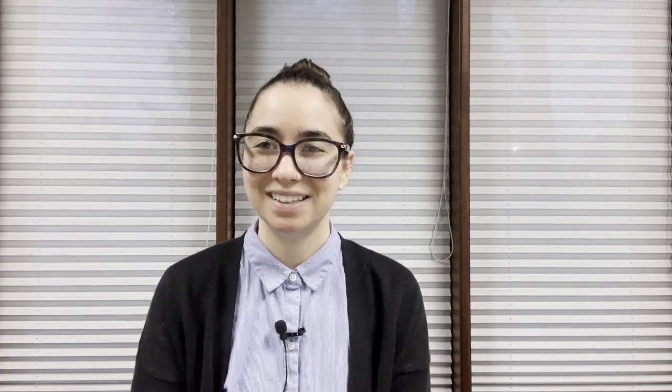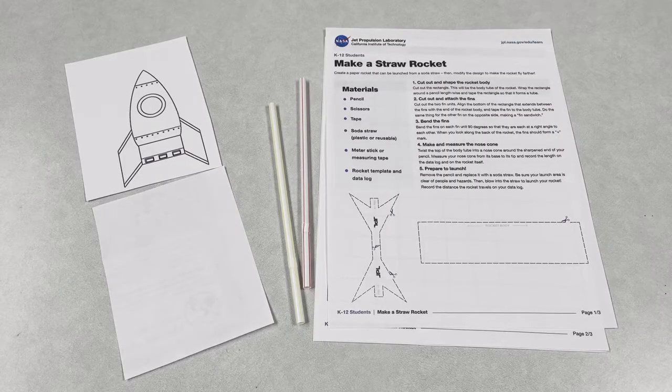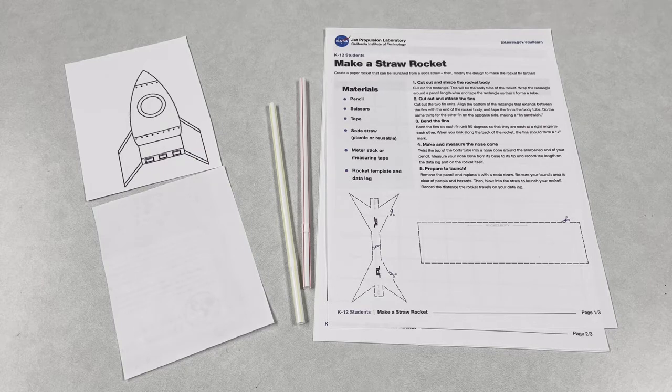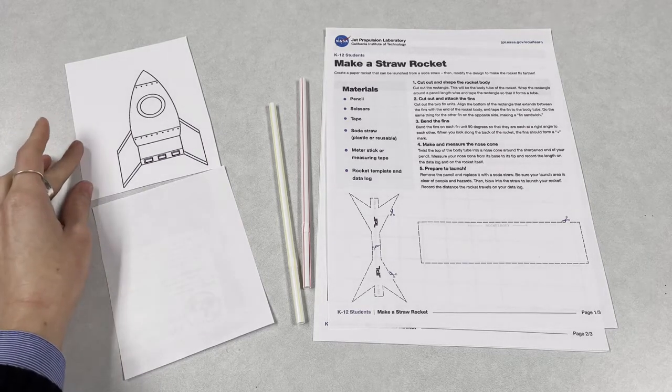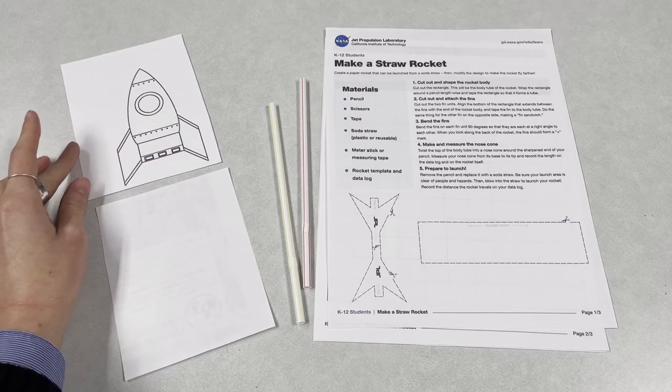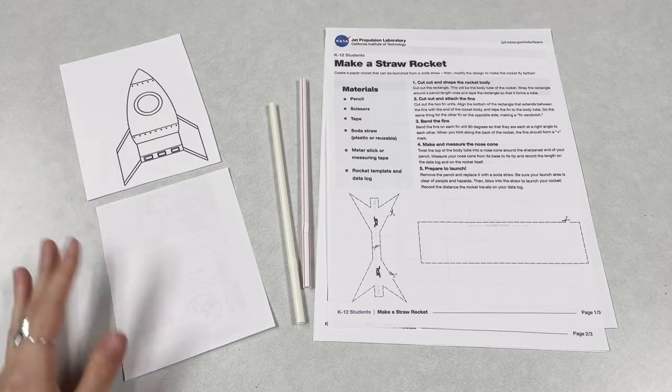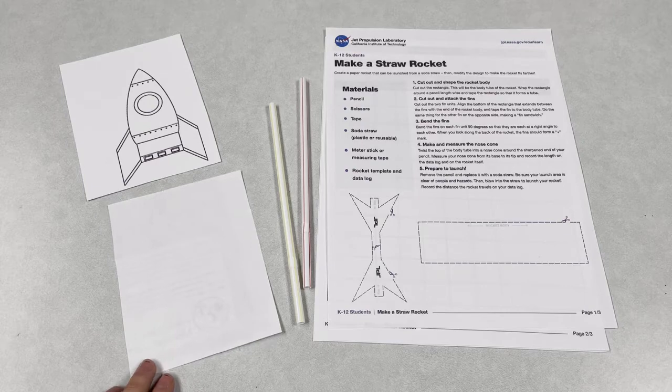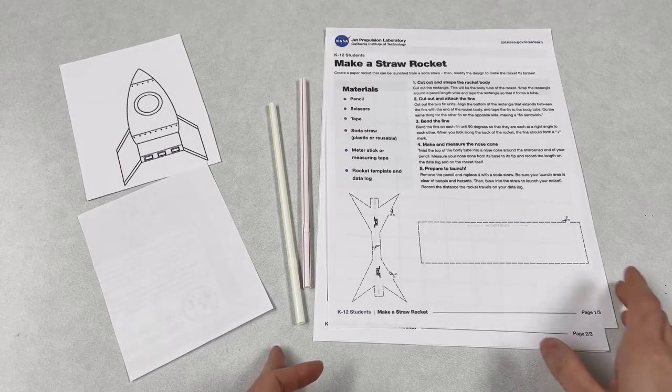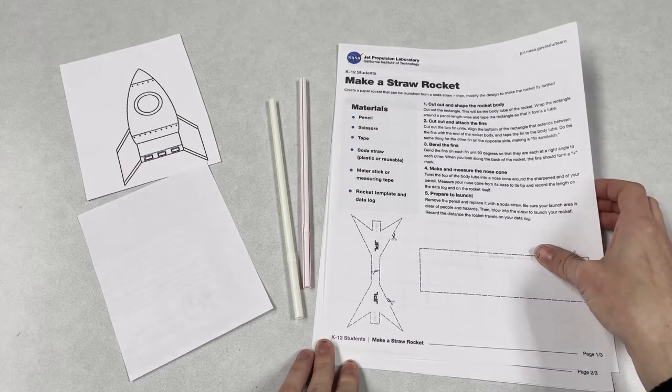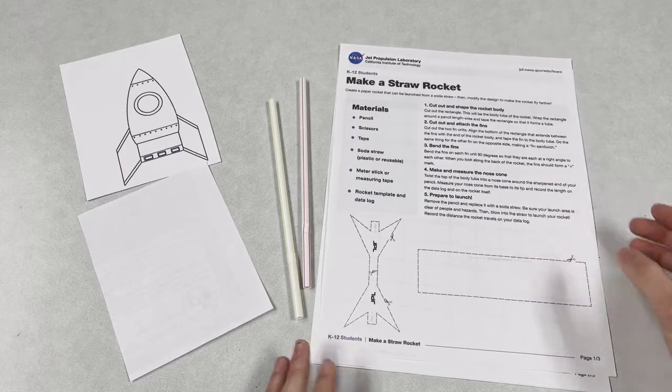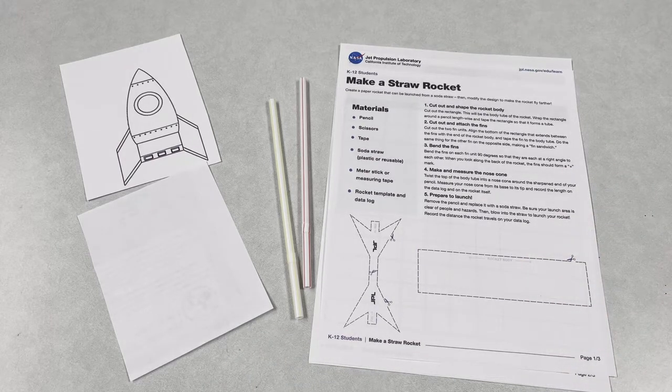Let's get started. In your craft kit this week you're going to get materials to make two different types of rockets. You're going to get a rocket that is printed on thick cardstock, a little scrap of paper, and a packet from the NASA Jet Propulsion Laboratory. You're also going to get two straws.